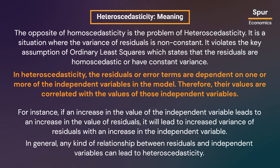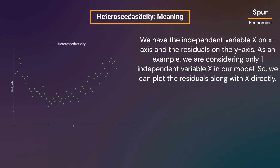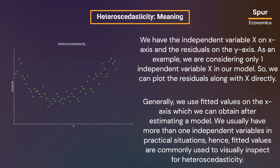Any kind of relationship between residuals and independent variables can lead to heteroscedasticity. Looking at the plot shown here, we have the independent variable X on the x-axis and the residuals on the y-axis. For this example we consider only one independent variable X, so we can plot residuals against X directly. In practice, with more than one independent variable, we typically use fitted values on the x-axis to visually inspect for heteroscedasticity.